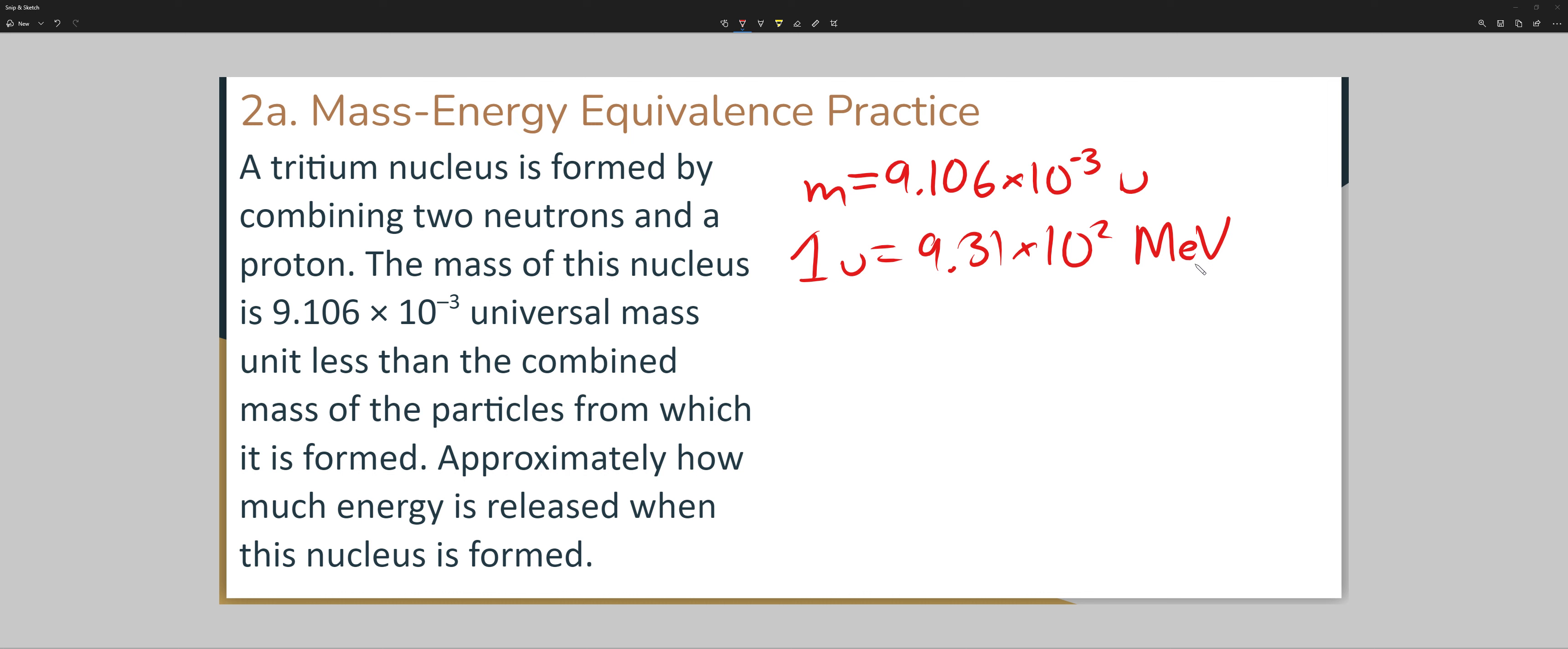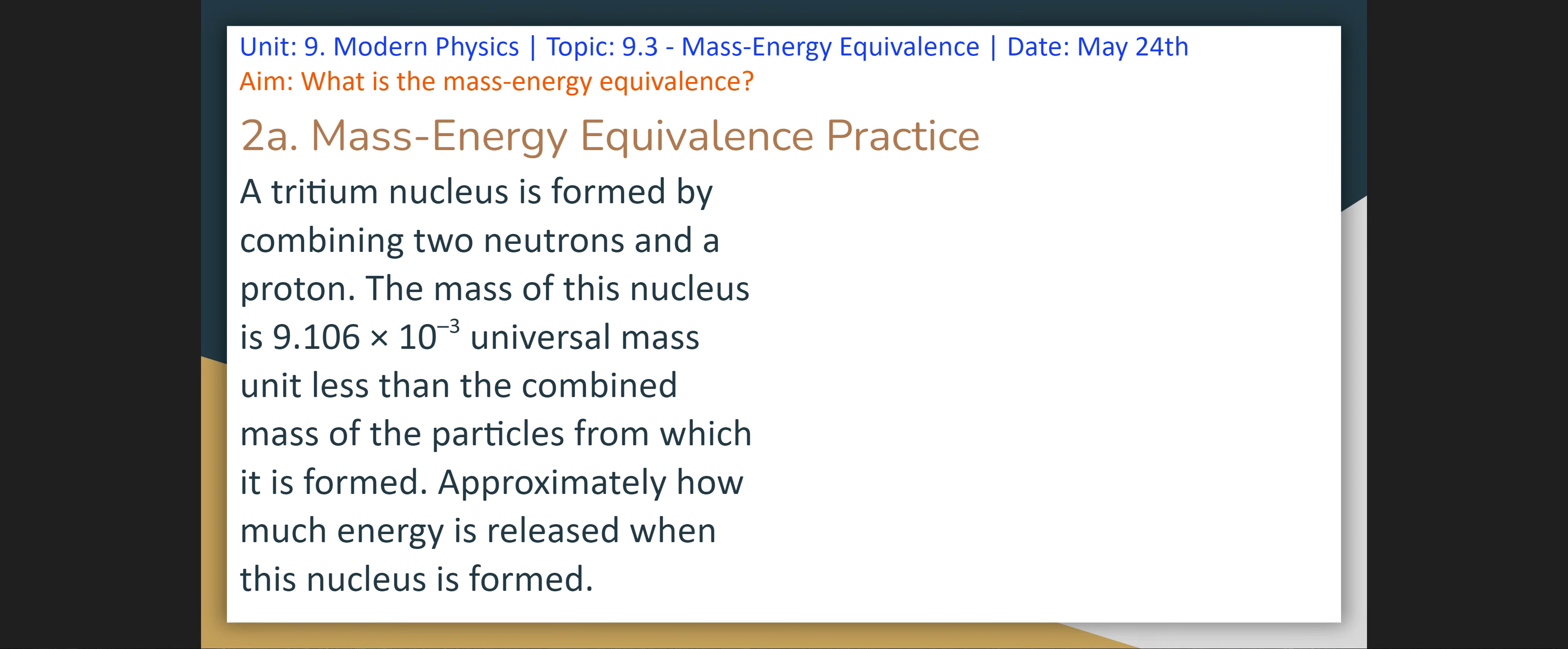So you're going to convert this to mega electron volts. You're going to substitute it: 9.106 times 10 to the negative 3 times 9.31 times 10 to the 2. And then you'll get your energy. That's the answer, and that's this unit.